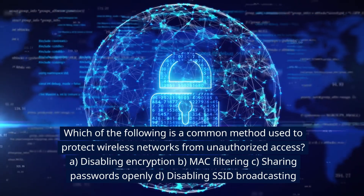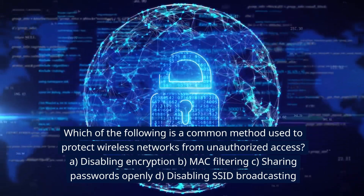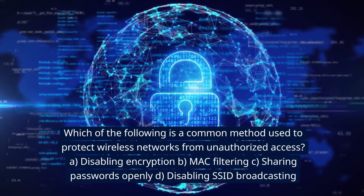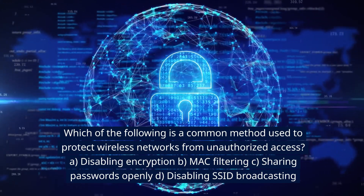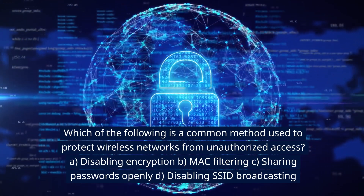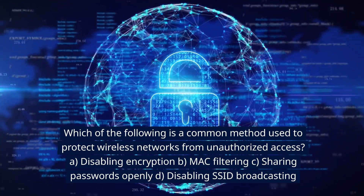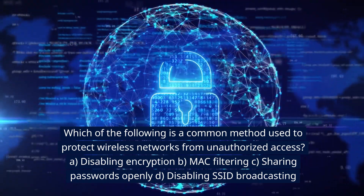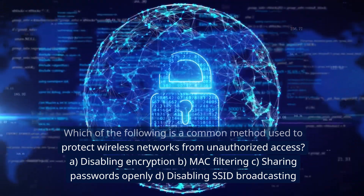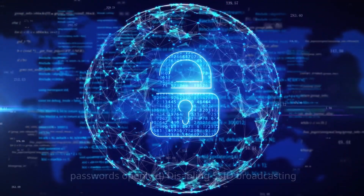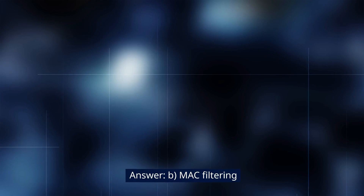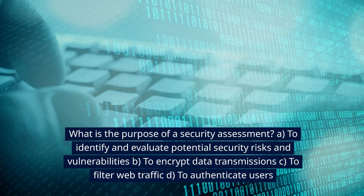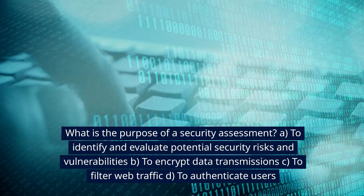Which of the following is a common method used to protect wireless networks from unauthorized access? A. Disabling encryption. B. MAC filtering. C. Sharing passwords openly. D. Disabling SSID broadcasting. Answer: B. MAC filtering.